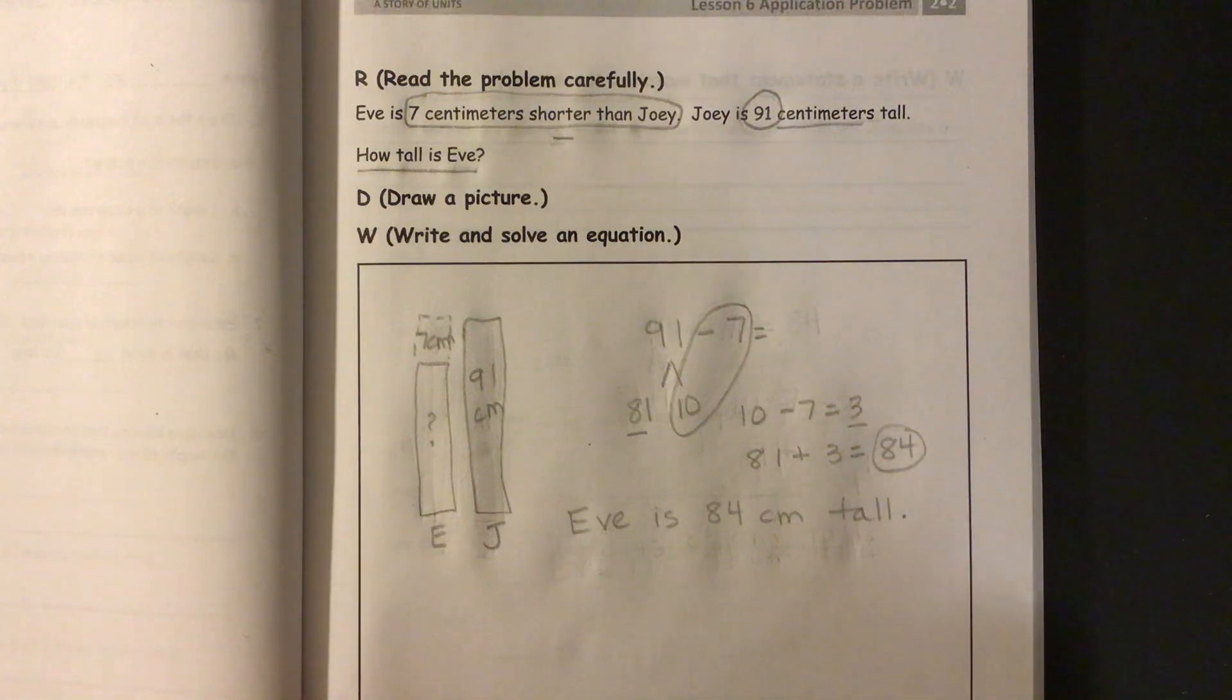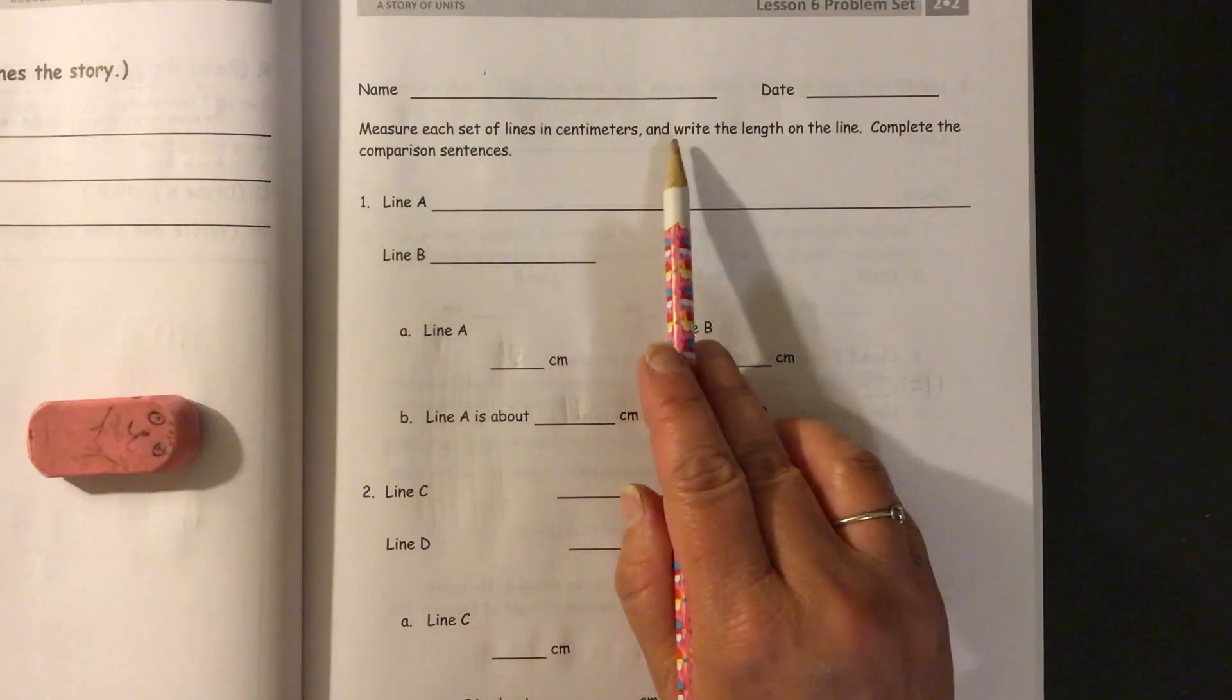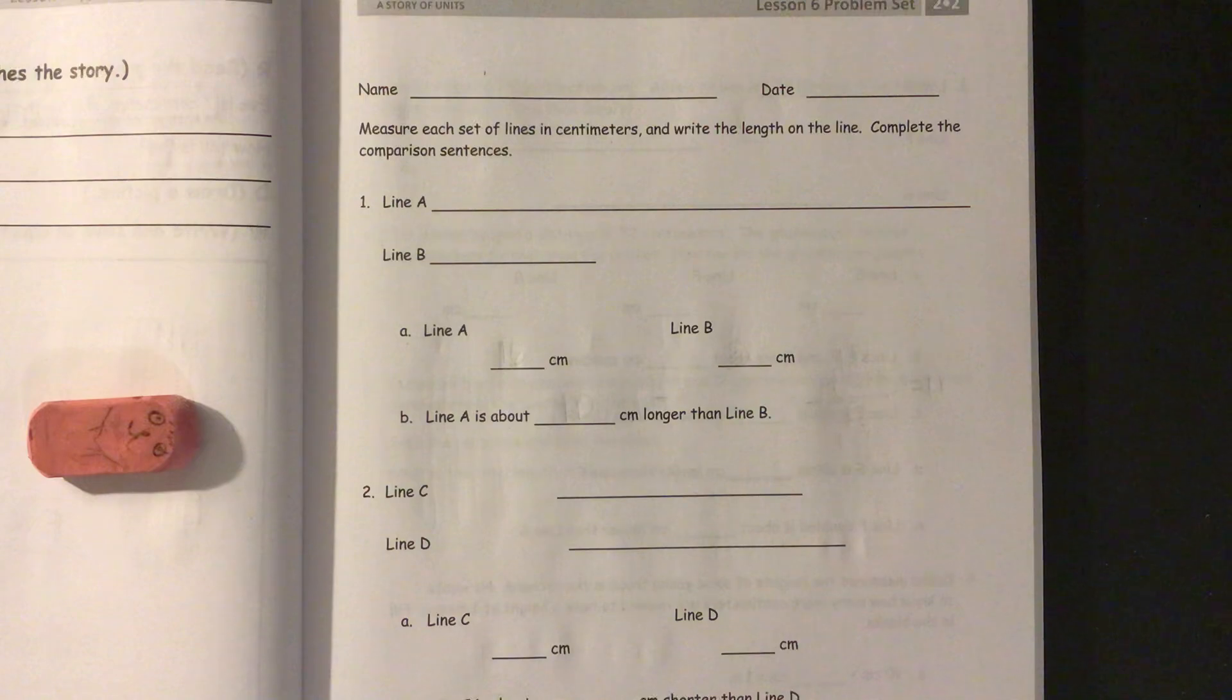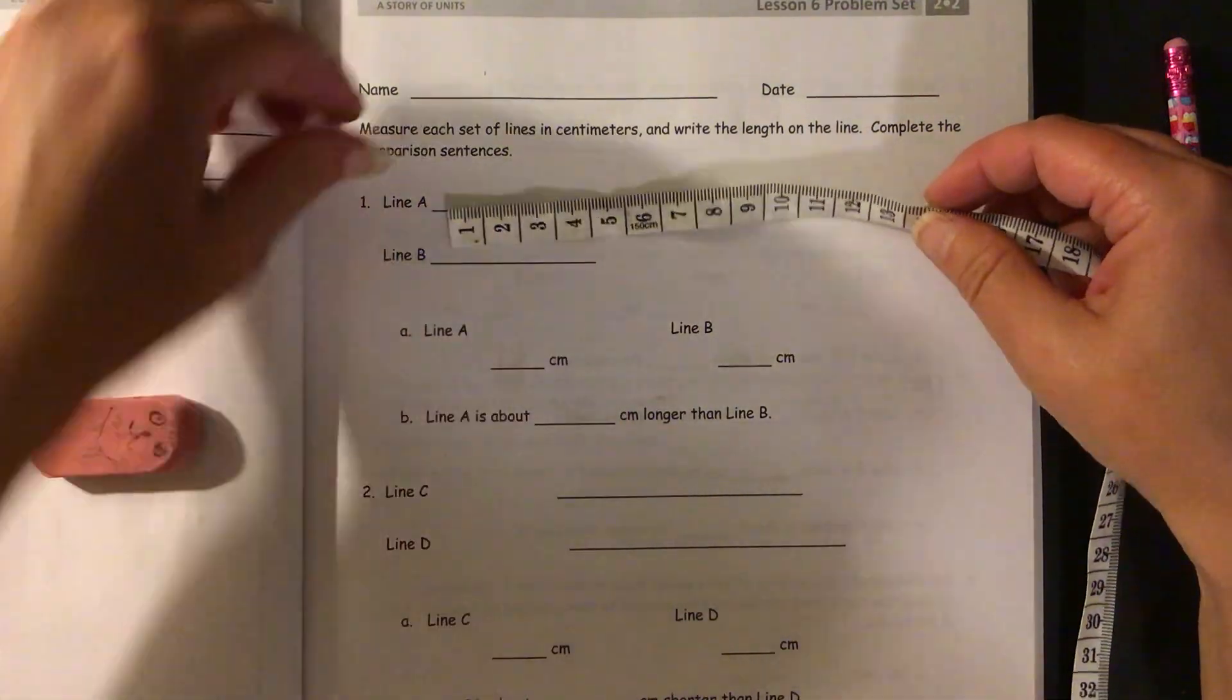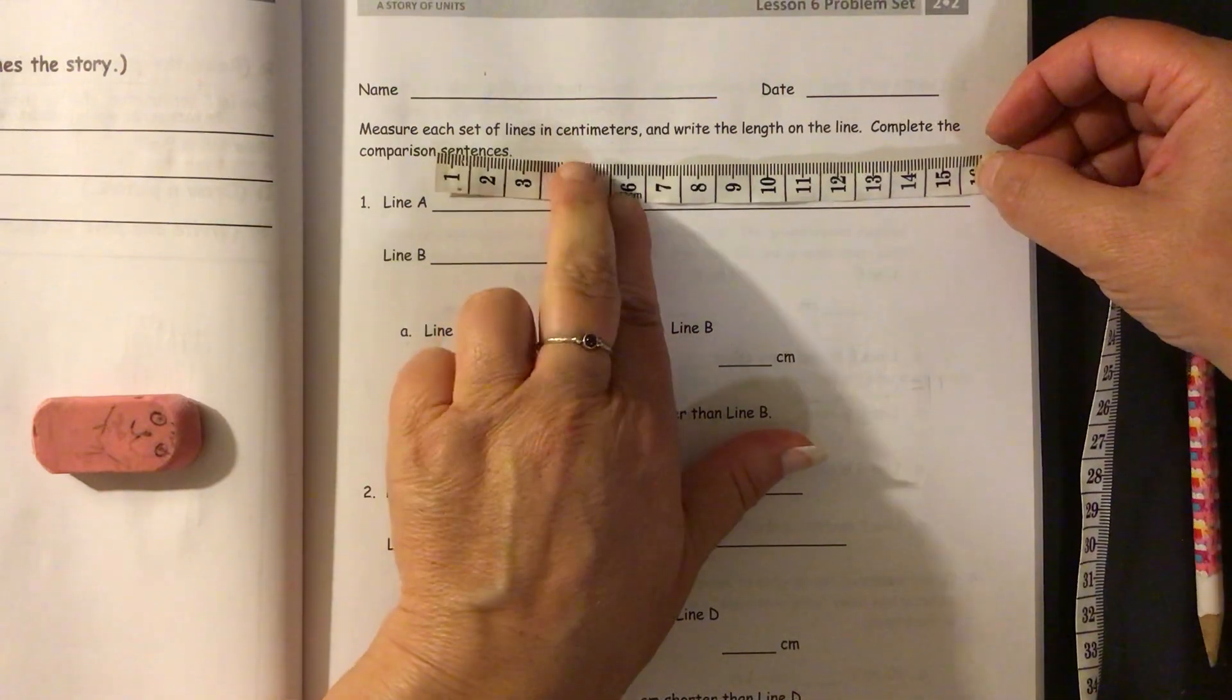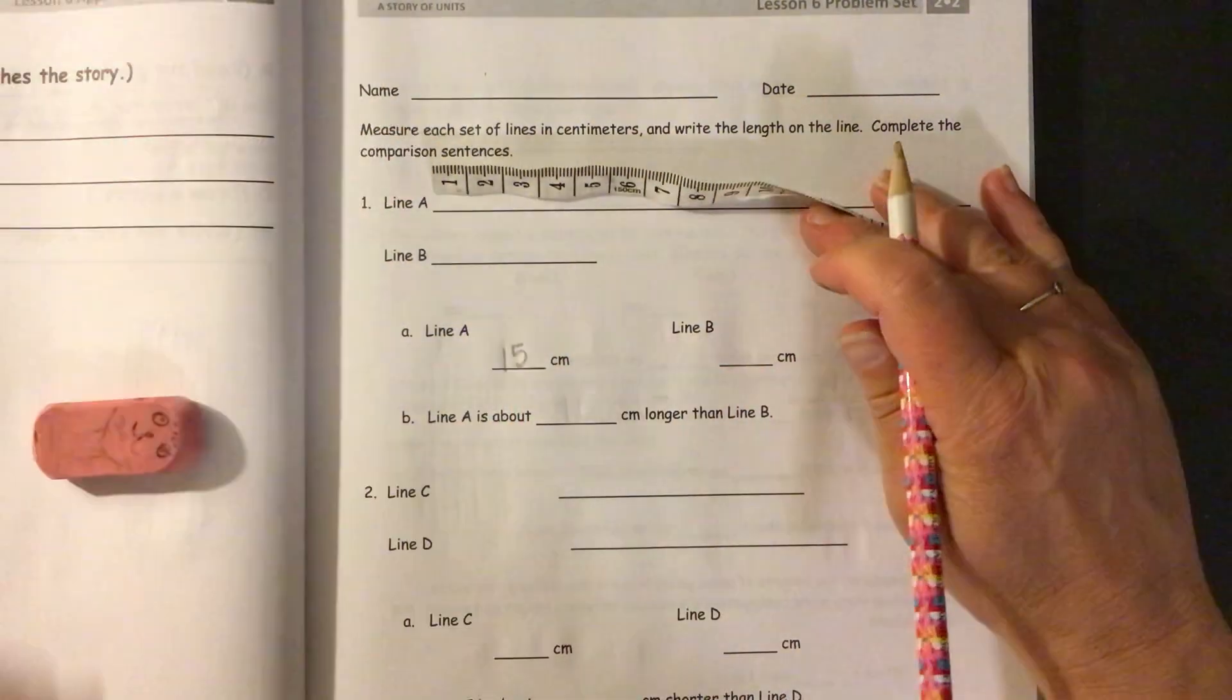Okay, so we will turn the page and start our problem set. We will need to measure each set of lines in centimeters and write the length on the line. Complete the comparison sentences. So, comparison sentences, that means we're gonna be subtracting. I have a measuring tape. I thought it would be a good thing to use just because it looks so clear. So measure A. And it looks like it's just a little bit longer than 15, but not too much. So we'll say it's 15 centimeters.